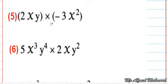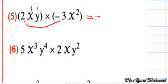Next: 2xy times negative 3x to the power of 2. We have 2x power 1, y power 1, multiplied by negative 3x to the power of 2. First, 2 times negative 3 equals negative 6. Then x power 1 and x power 2 together equal x power 3, because 1 plus 2 equals 3. And y appears only in the first term, so we write y without change.